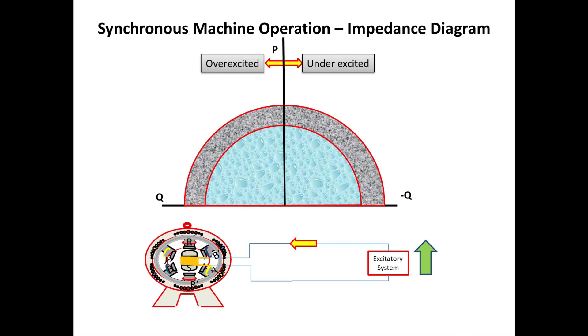Now we need to understand when the field excitation is reduced, that is under excitation, then it gets leading power factor. When the generator is operating in over excitation, then it is running in lagging power factor. These are the two important points we have to know.